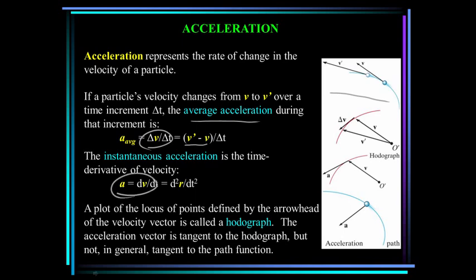A hodograph is a locus of points defined by the velocity vector. We take velocity vectors V and V prime and put their tails together at some point O prime. The locus of points defined by those velocity vectors as a function of time is the hodograph, and the acceleration is tangent to the hodograph. In general, the acceleration is not tangent to the path function.